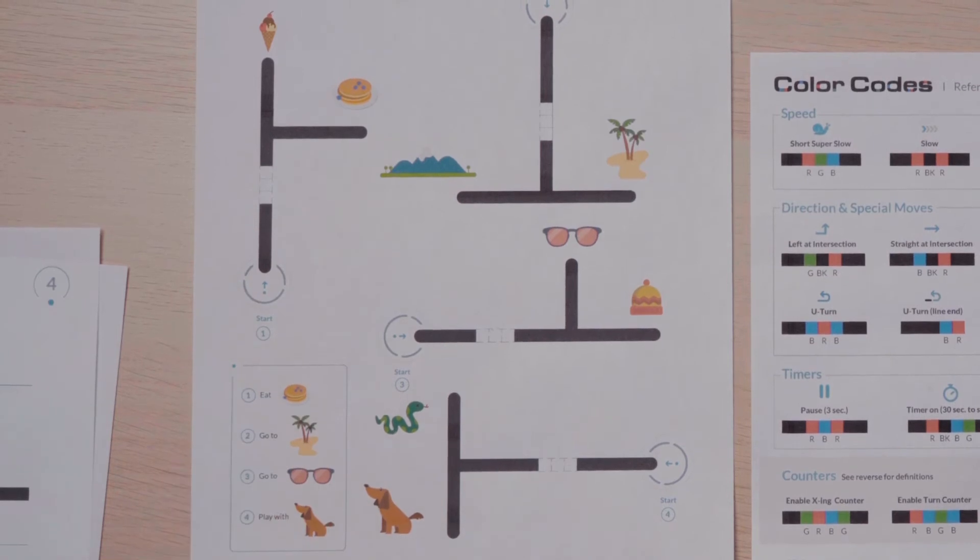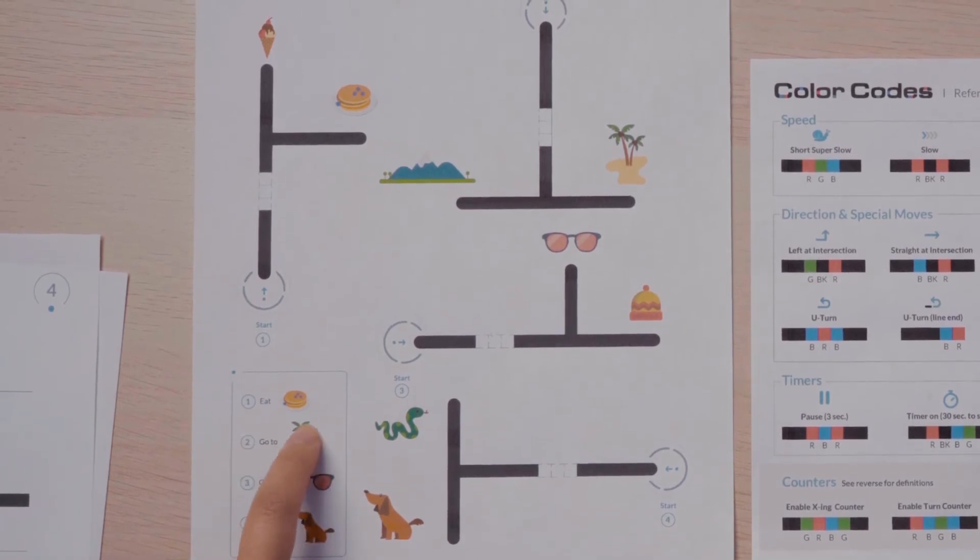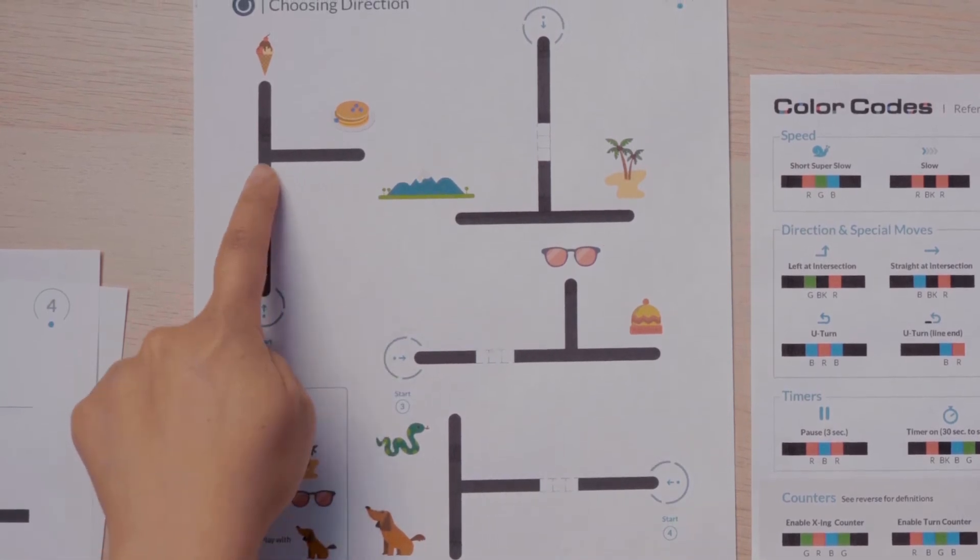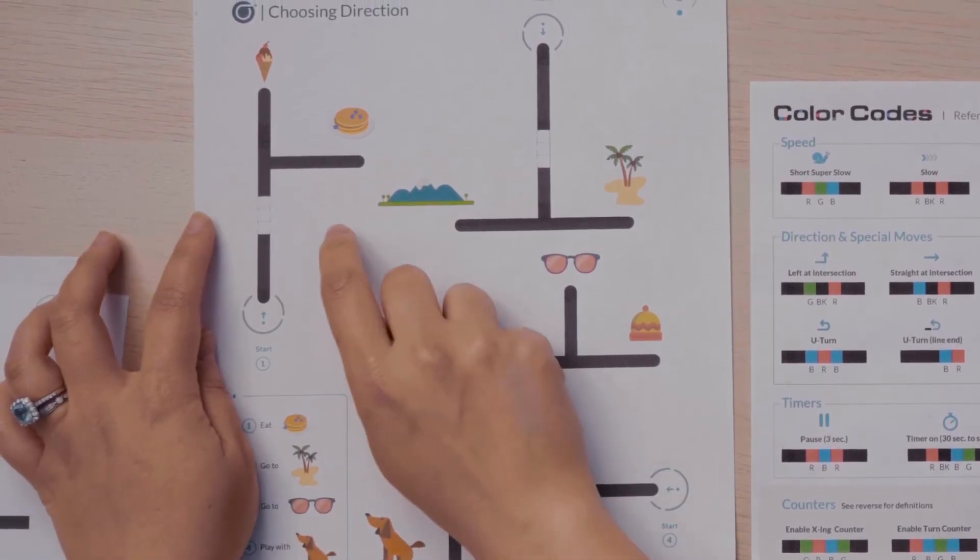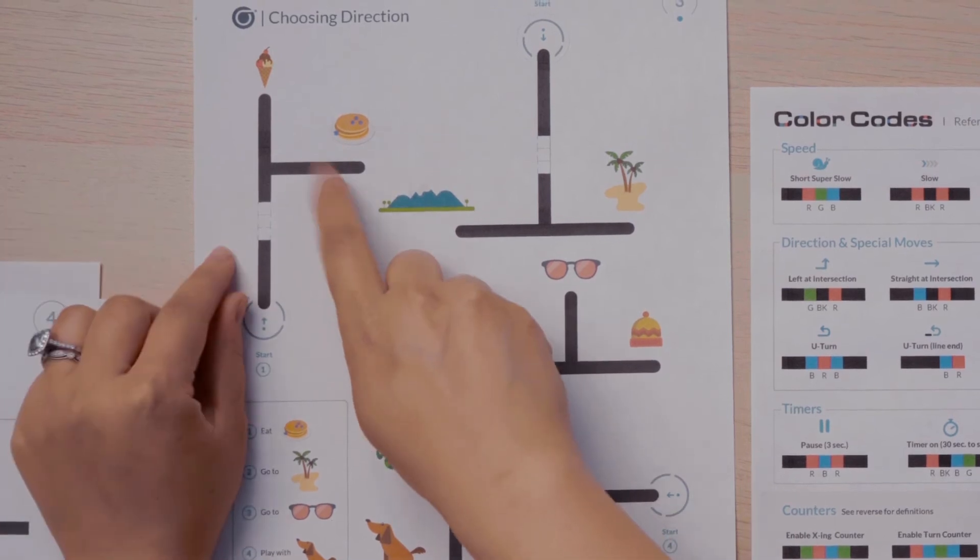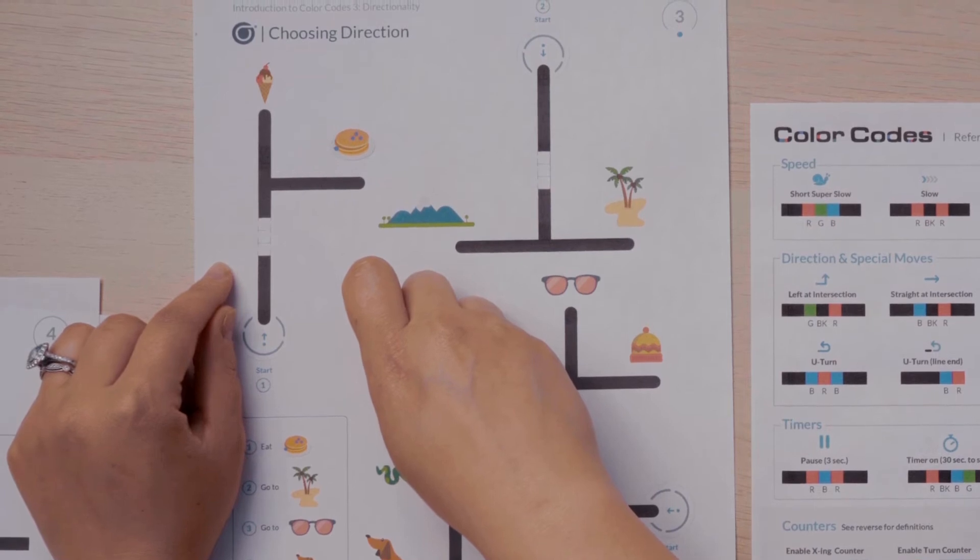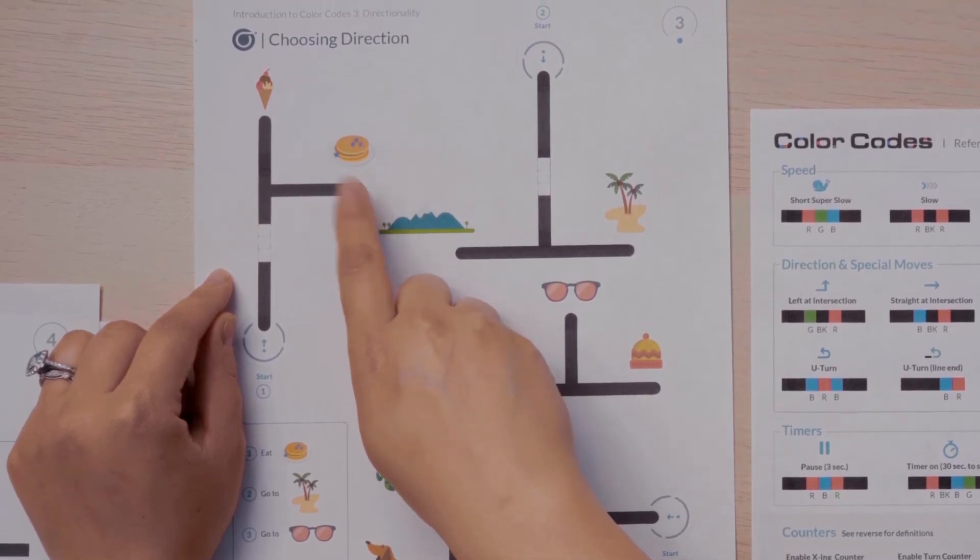Let's do the first one together. Eat pancakes. My bot will travel from start, run over this color code, and then it needs to either turn left or right to get to the pancakes. Which way should it travel? That's right. It needs to turn right.